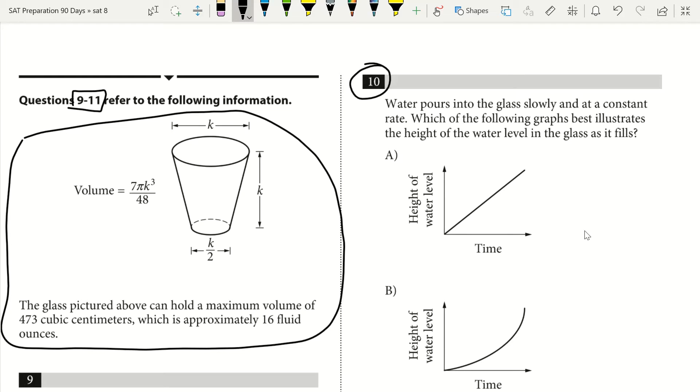Obviously we have what looks like a cup here. It says the glass pictured above can hold a maximum volume of 473 cubic centimeters, which is about 16 fluid ounces. We're given an equation for volume, but just by looking at this cup we see that our circumference is getting larger as we move up in this cup.